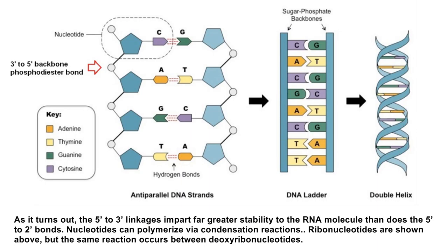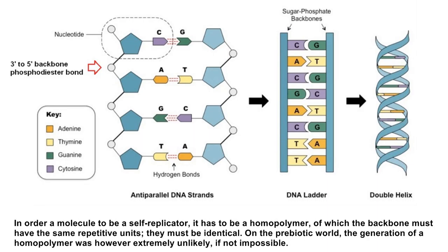As it turns out, the 5' to 3' linkages impart far greater stability to the RNA molecule than does the 5' to 2' bonds. Nucleotides can polymerize via condensation reactions — ribonucleotides are shown above, but the same reaction occurs between the deoxyribonucleotides. In order for a molecule to be a self-replicator, it has to be a homopolymer of which the backbone must have the same repetitive units — they must be identical.